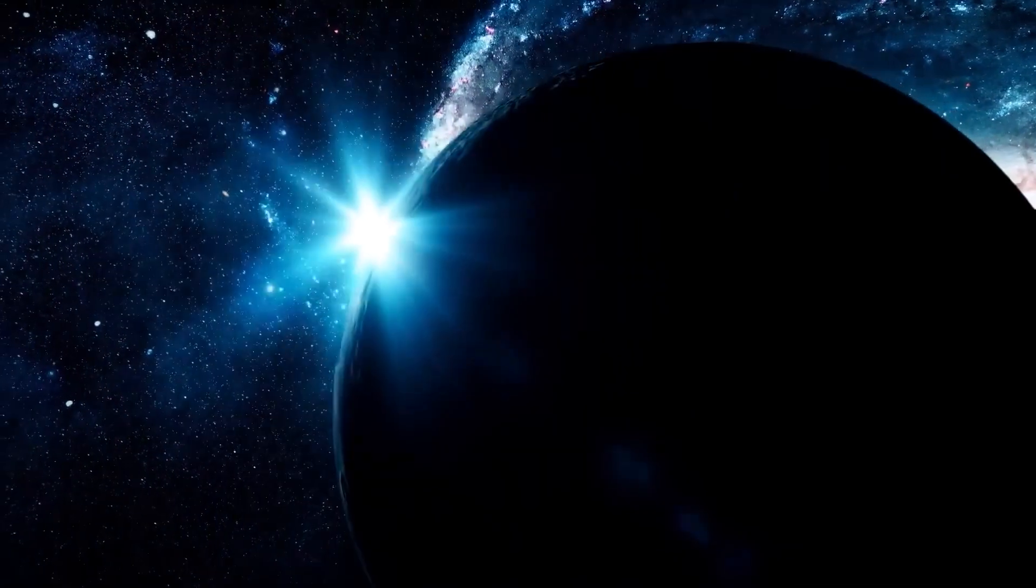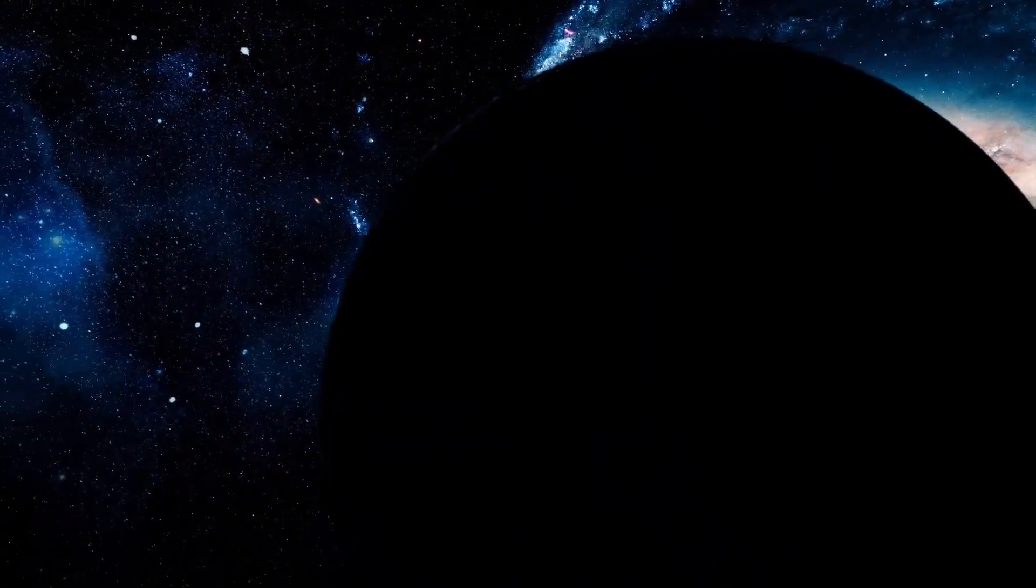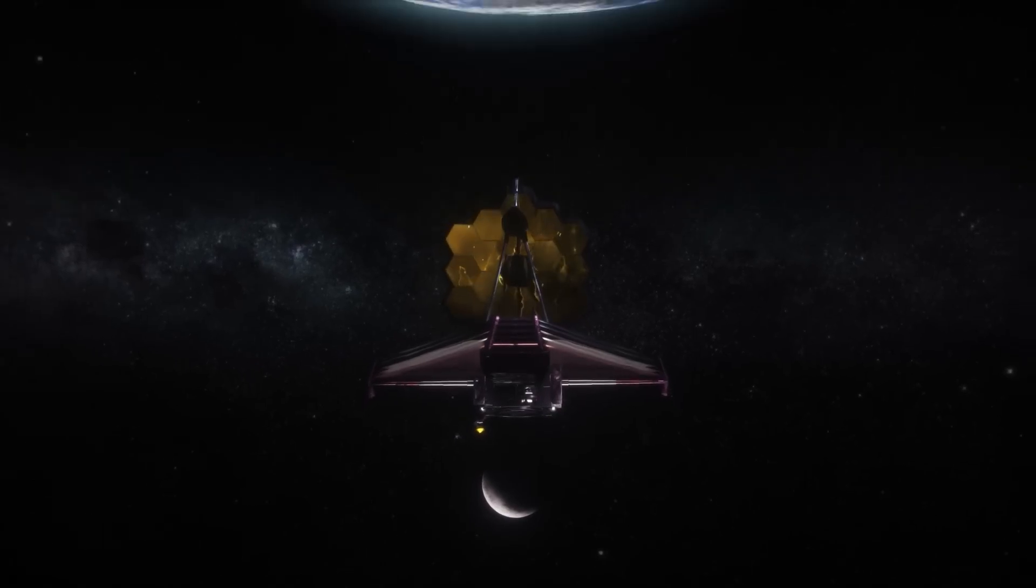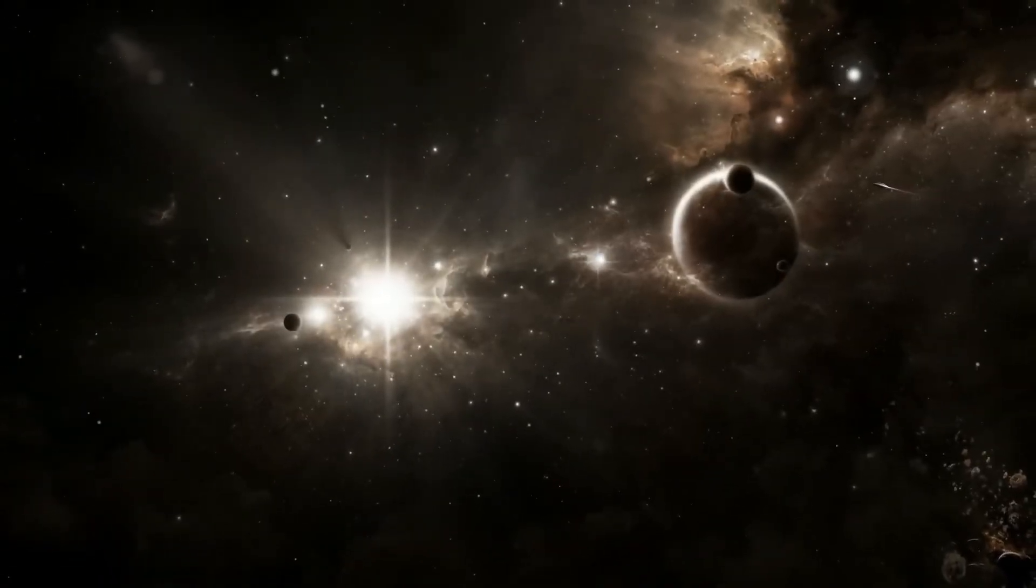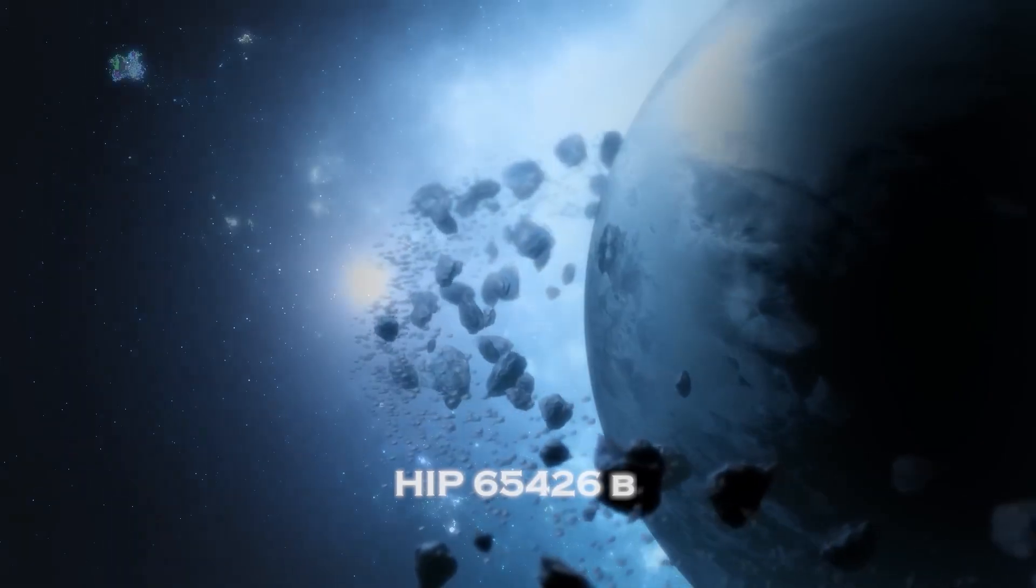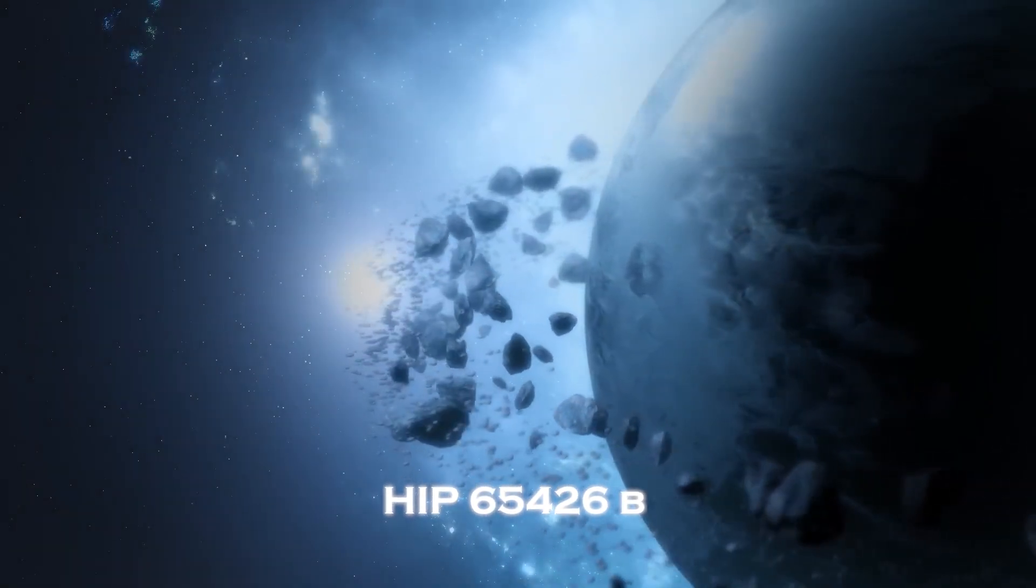Most exoplanets are so far away that they can only be detected when the light from their host star is dimmed. The first direct image of an exoplanet was taken in September last year. This planet was identified in 2017 and given the name HIP 65426B.